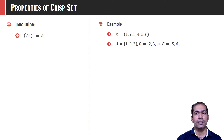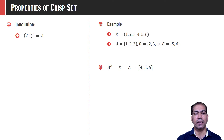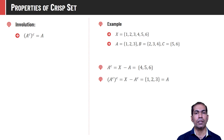Involution says the complement of A complement is always going to be the same set A. So if you find A complement for the given set A = {1, 2, 3}, that is nothing but X minus A with respect to the universal set, which would be {4, 5, 6}. If you find the complement of this A complement again, then that would be {1, 2, 3}, which is the set itself. Hence, the involution property is proved.